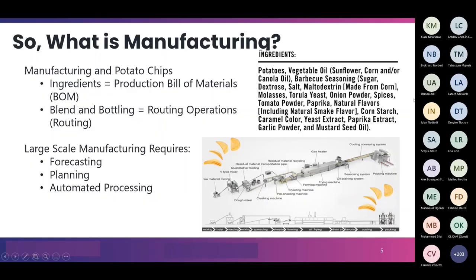So what is manufacturing? I work with several manufacturers across different industries — metals, automotive, food, pharma, and more. Here's an example from one of my customers: they make potato chips. Our ingredients are our bill of materials — we have to create that bill of material so we can manufacture our items. In this example my ingredients are the components that will be in my BOM.